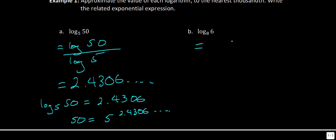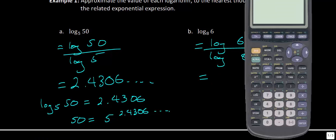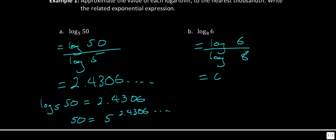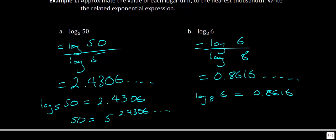Using the change of base rule for part b, we express log base 8 of 6 as log(6) / log(8). Entering this into the calculator gives approximately 0.8616. So log base 8 of 6 ≈ 0.8616, and in exponential form, 6 = 8^0.8616. Note that this is an approximation, not an exact value.